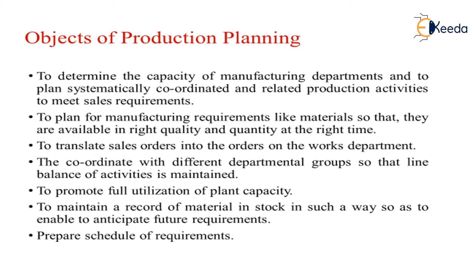The objectives of production planning are to find the capacity of the manufacturing departments, to systematically coordinate the related production activities, and to meet sales requirements. The first functions we perform are determining the manufacturing department's quantities, coordination among them, and the sales requirements.